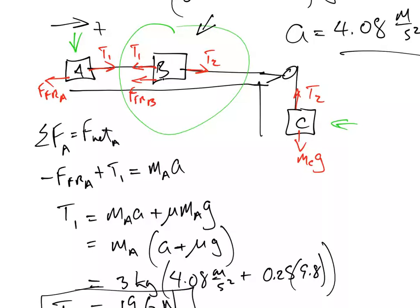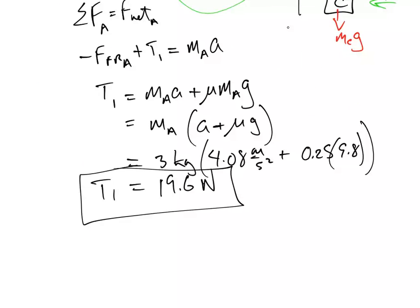So, a better thing to do is to actually pick mass C. That way, if you got the acceleration right and you messed up on T1, you could still end up getting T2 correct. Alright, so let's come down here and do T2.